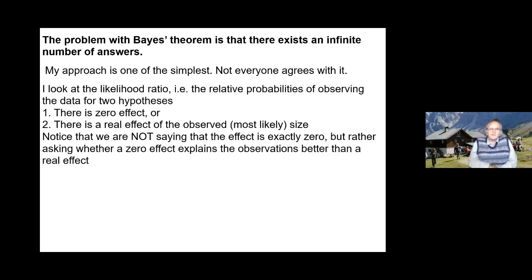What I do is look at the likelihood ratio, that is to say the relative probabilities of observing the data given two different hypotheses. One hypothesis is zero effect, that's the null hypothesis, and the other hypothesis is that there's a real effect of the observed size, that's a maximum likelihood estimate of the real effect size.